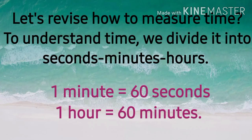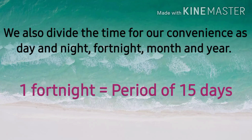Now let's revise how to measure time. To understand time, we divide it into seconds, minutes, and hours. You know that 1 minute is equal to 60 seconds and 1 hour is equal to 60 minutes. We also divide time for our convenience as day and night, fortnight, month and year. One fortnight is a period of 15 days.